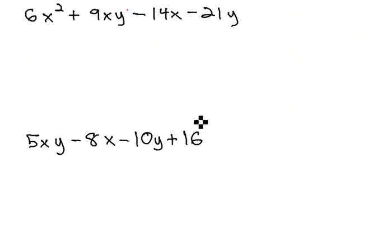We'll look at 6x squared plus 9xy minus 14x minus 21y. We split down the middle and look at the left side, trying to find a common factor. On the left side, the common factor is 3x. When we factor out 3x, we're left with 2x plus 3y.